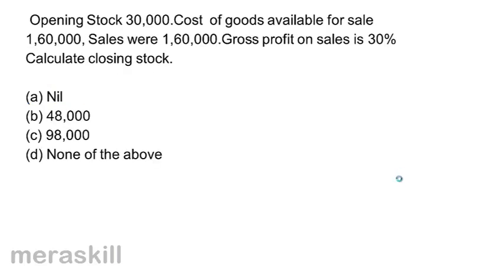Opening stock 30,000. Cost of goods available for sale 1,60,000. Sales 1,60,000. Gross profit on sales is 30%. Calculate closing stock. A, nil. B, 48,000. C, 98,000. And D, none of the above.